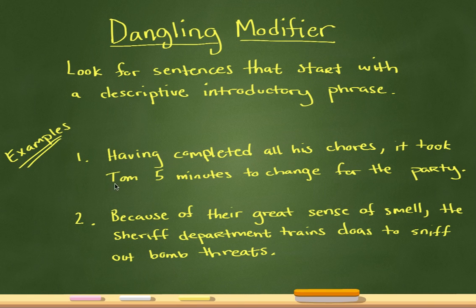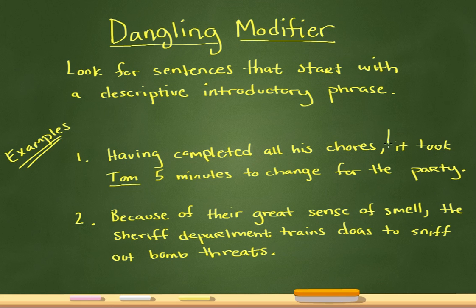In this sentence, obviously it's Tom who has completed all his chores. But right now, 'it' follows the comma — that's the error. This sentence should actually move Tom to be after the comma. So you would rearrange the sentence to say: 'Having completed all his chores, Tom took five minutes to change for the party.' Because now this first introductory phrase is actually describing Tom, which it's intended to do. That's a dangling modifier.